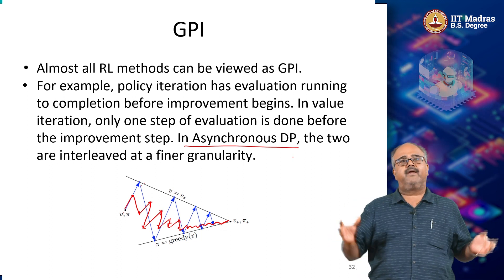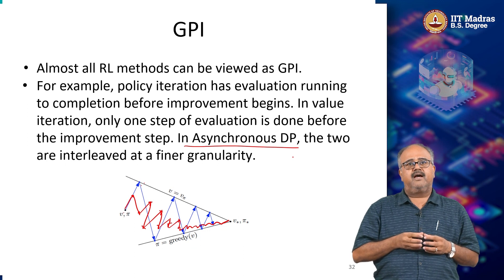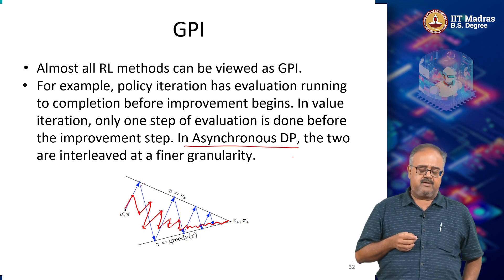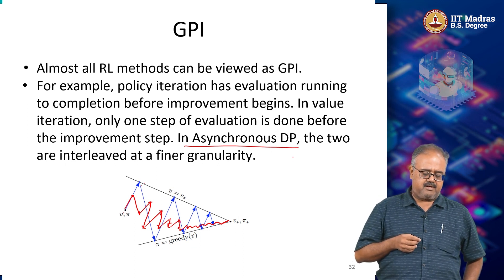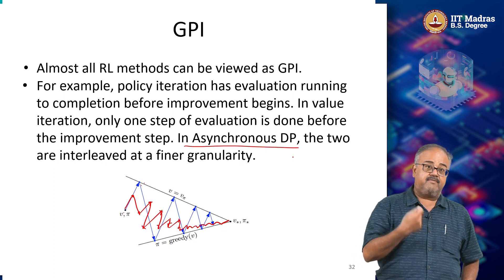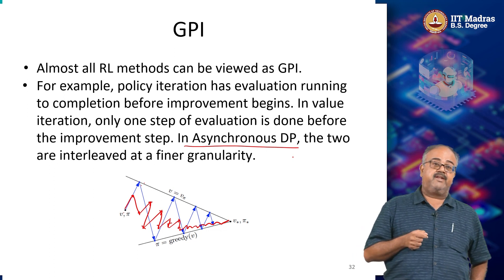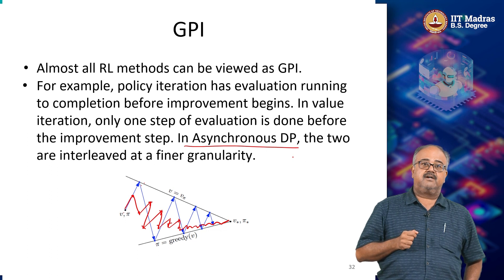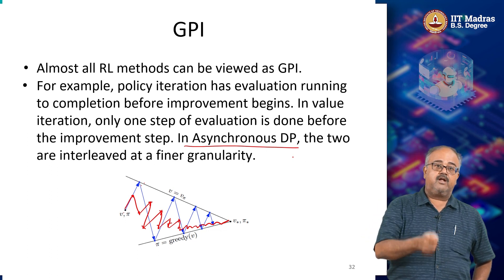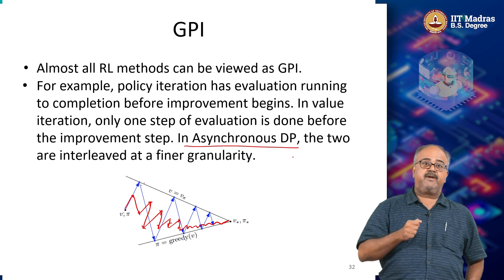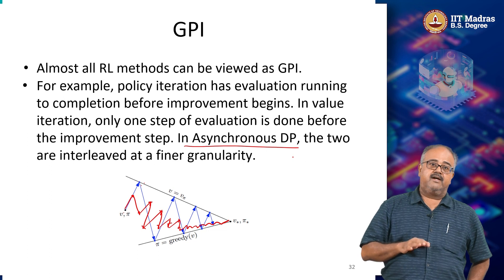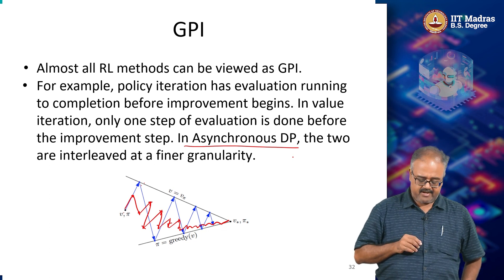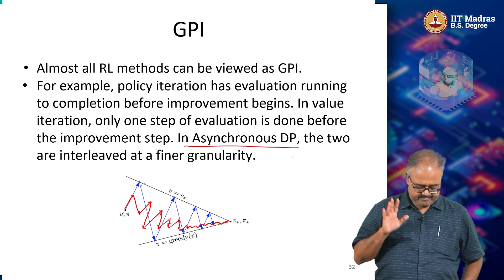Asynchronous DP is one form of generalized policy iteration, and value iteration is an extreme form of generalized policy iteration. Most reinforcement learning methods we will see later are some form of generalized policy iteration. Just keep in mind that it is a very powerful technique - you do not have to be very particular about whether convergence has been reached in the policy evaluation stage or whether you are updating all states, as long as some kind of reasonable guarantees are satisfied it will work.